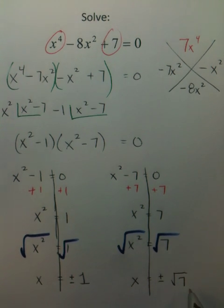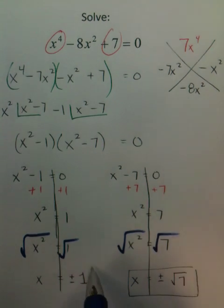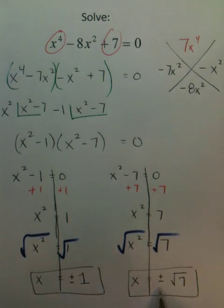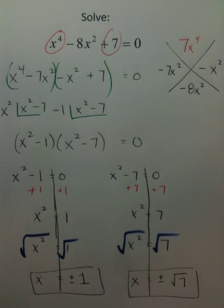So you may leave it like this, or if your teachers require you, grab a calculator and find out what radical 7 is. One, two, three, four answers, and that's how you solve this quartic.